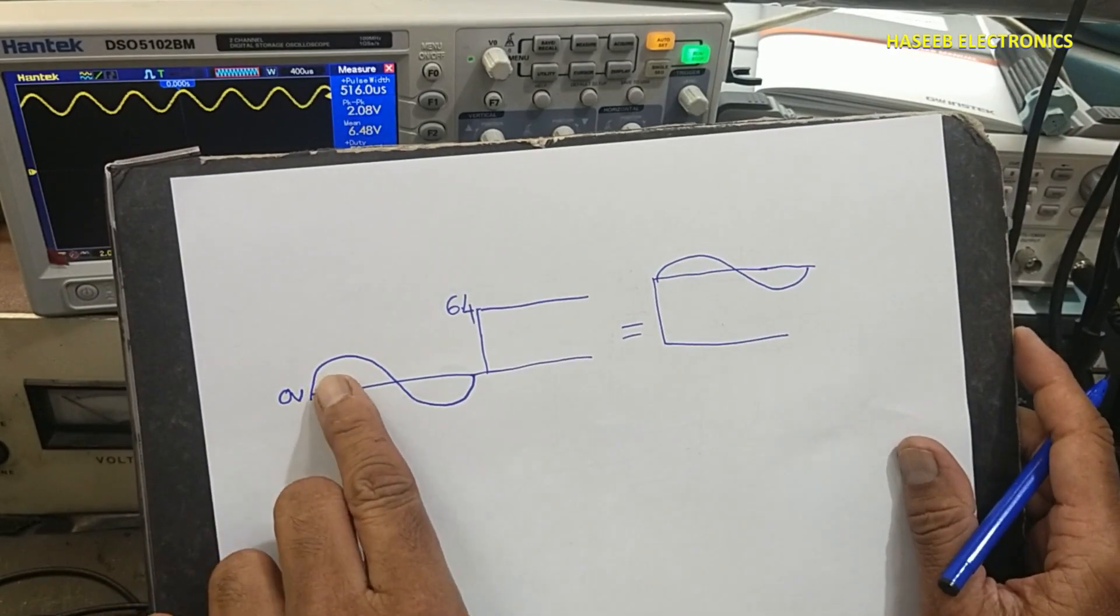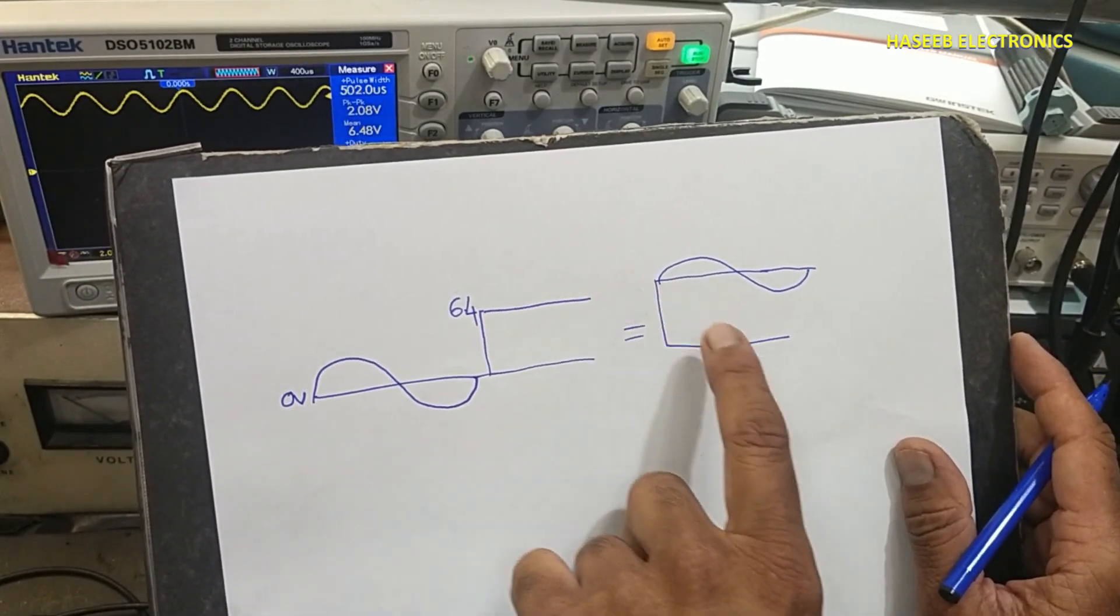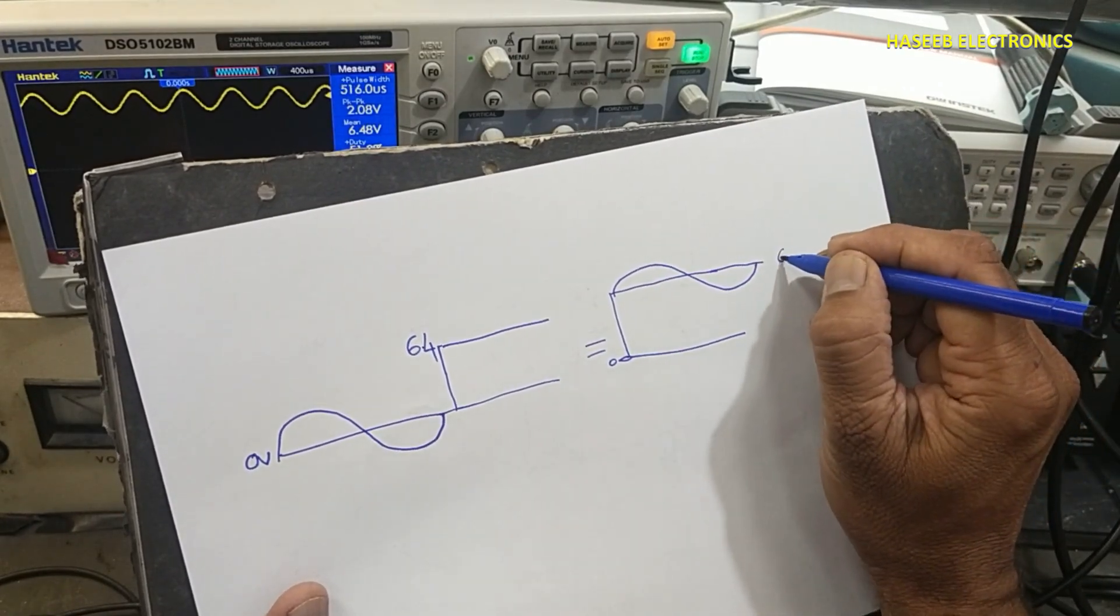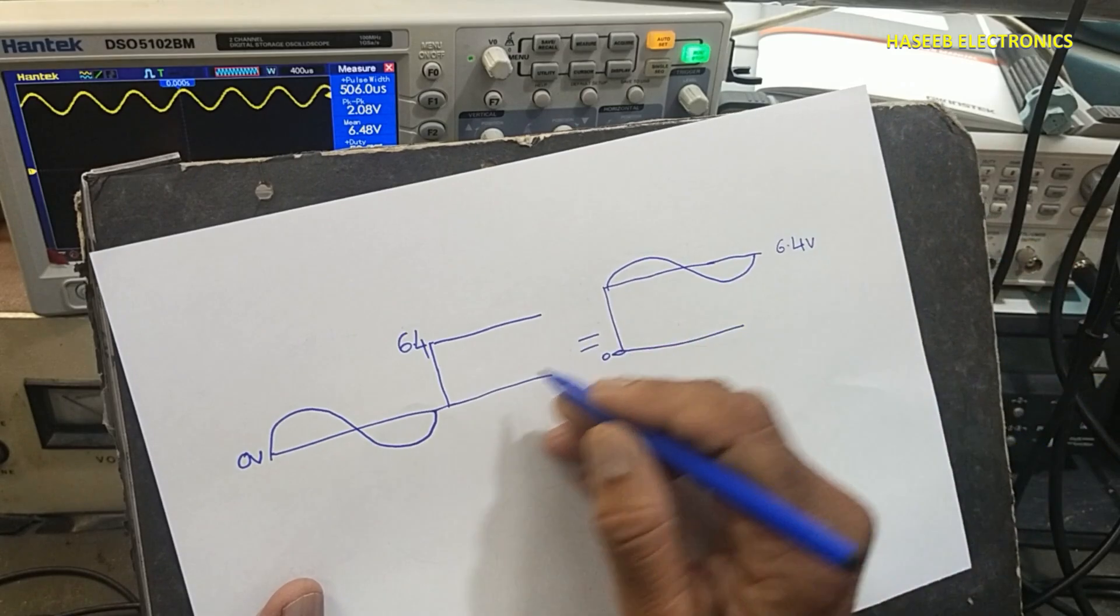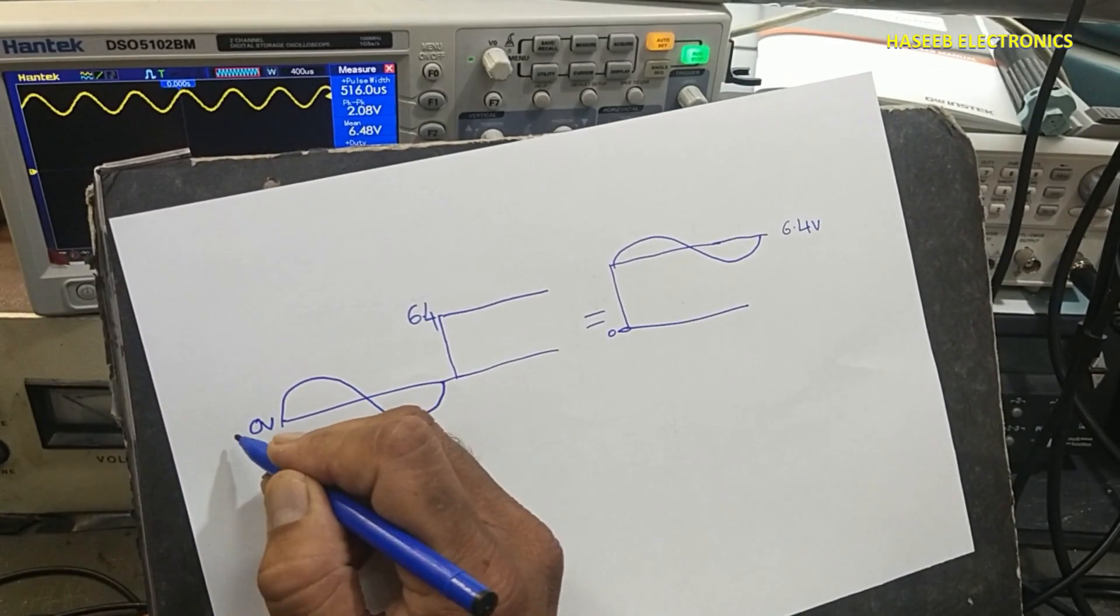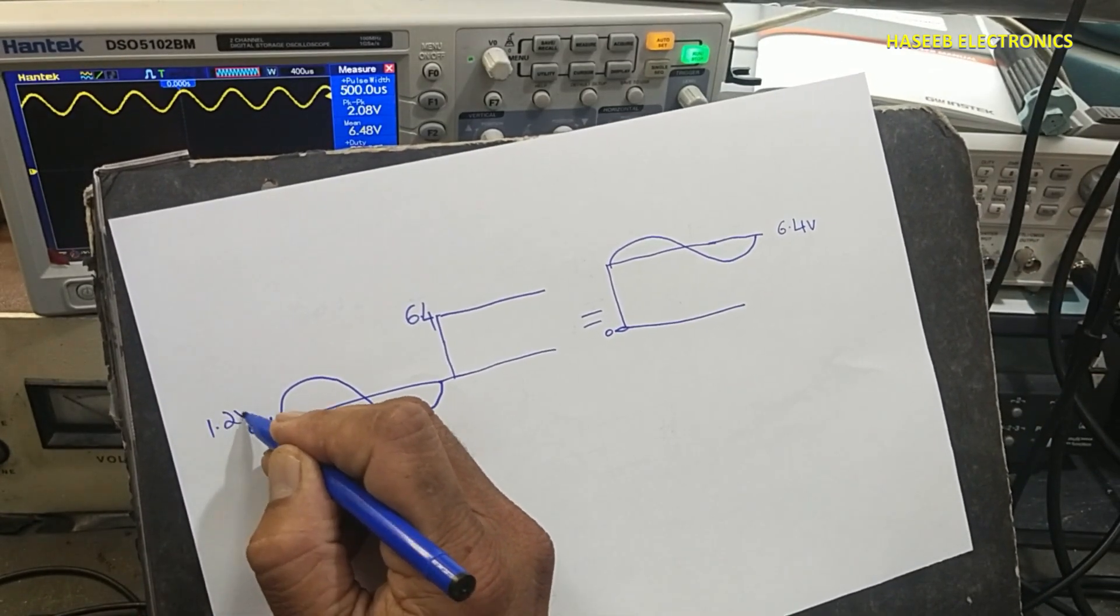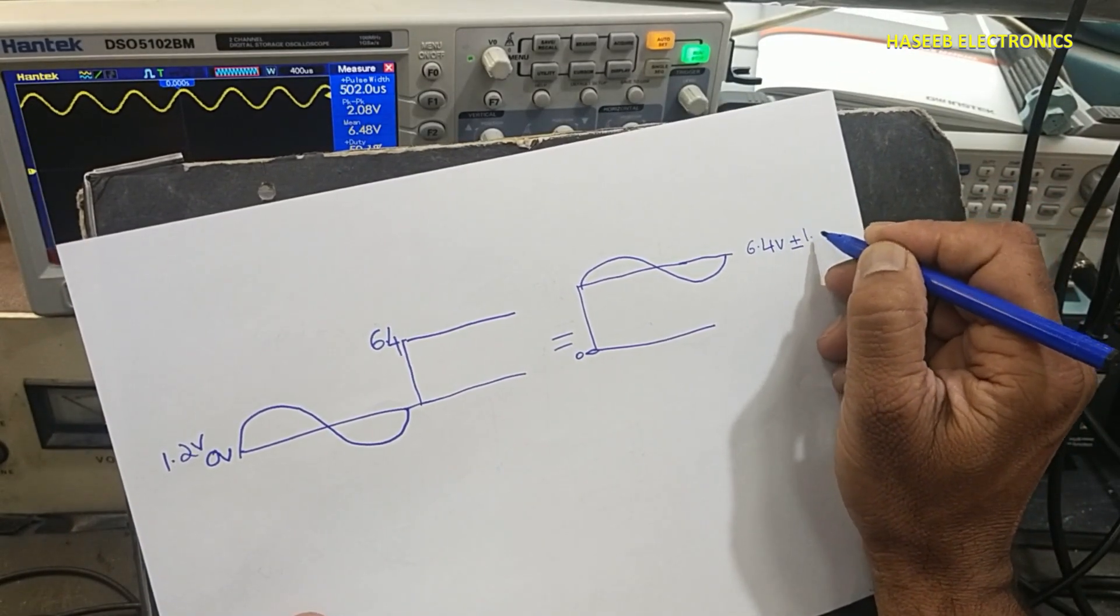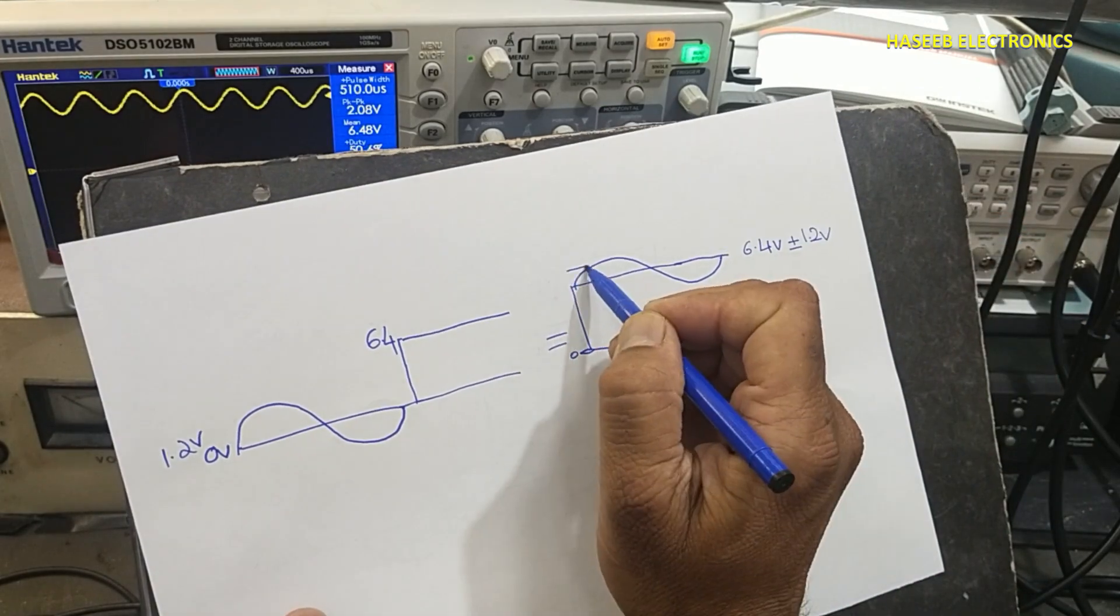Now this signal is being added on this DC level. Now this signal has positive offset, how much? 6.4 volts. If this signal is 1.2 volt, now plus minus 1.2 volt, we can see.